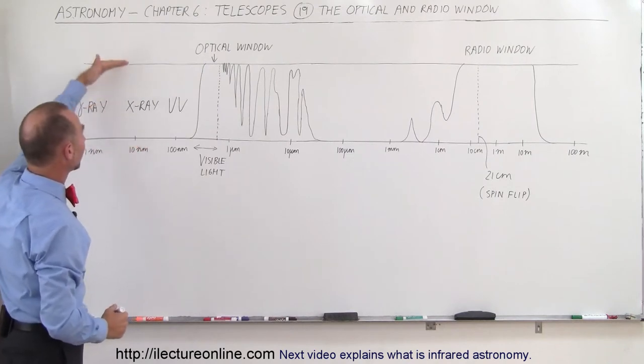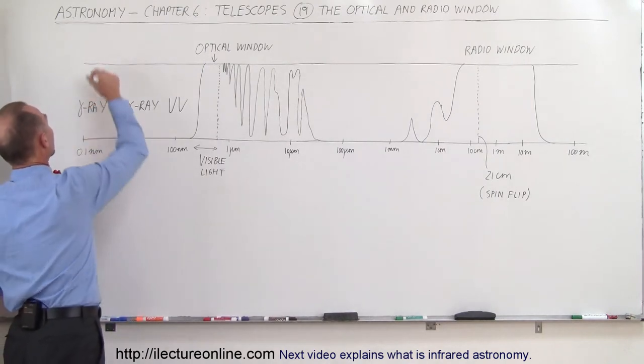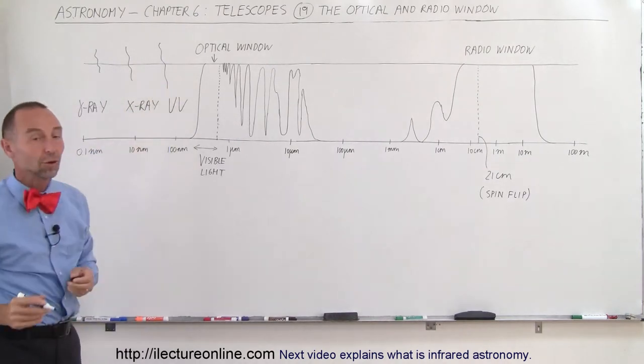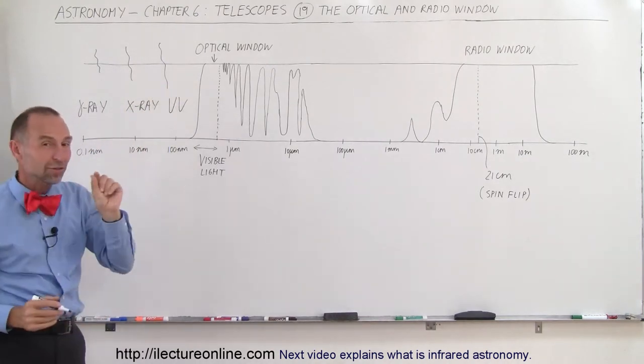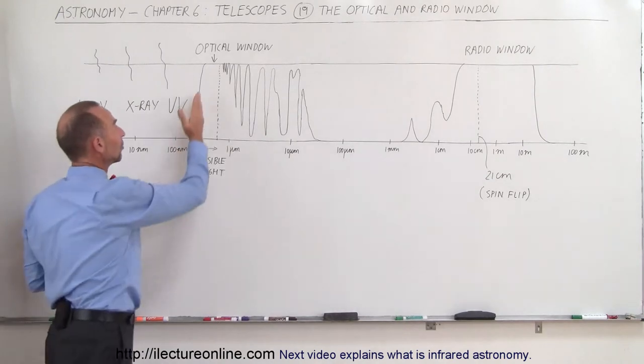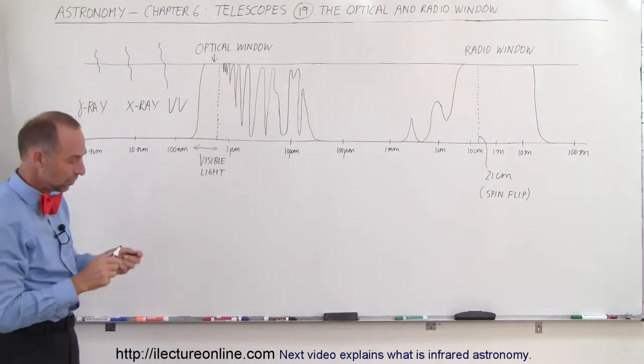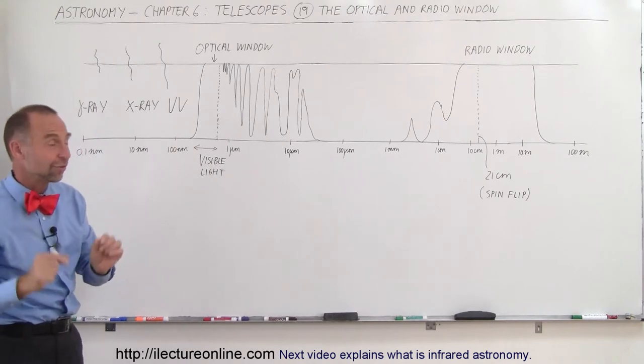Imagine this to be space and this to be the Earth. The radiation trying to make it through simply stops in the atmosphere and gets absorbed. Only a very small percentage of the UV radiation, right here at this very edge, actually makes it through to the ground. And luckily for us, it's just a very small amount.